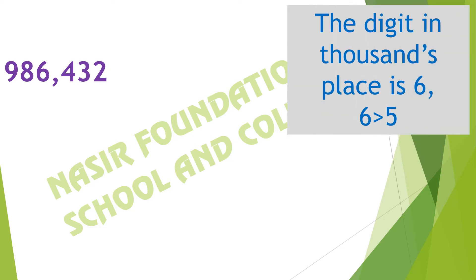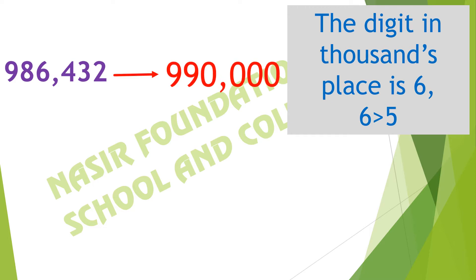To round off the number to the ten thousands, we will look at the digit in the thousands place. For 986,432, the digit in the thousands place is 6. Since 6 is greater than 5, we round it up. The digit in the thousands place is 6, so 986,432 rounds up to 990,000.